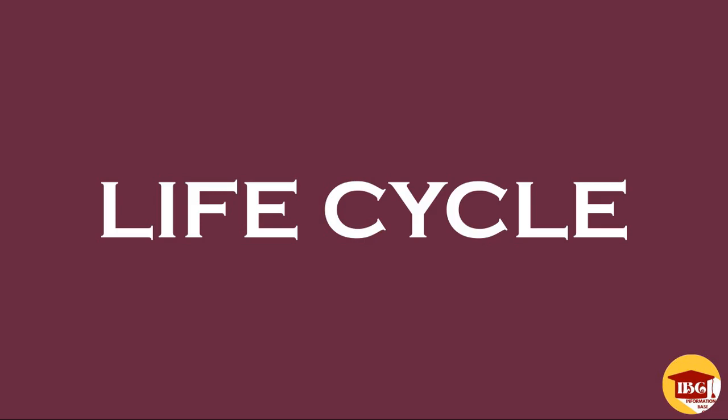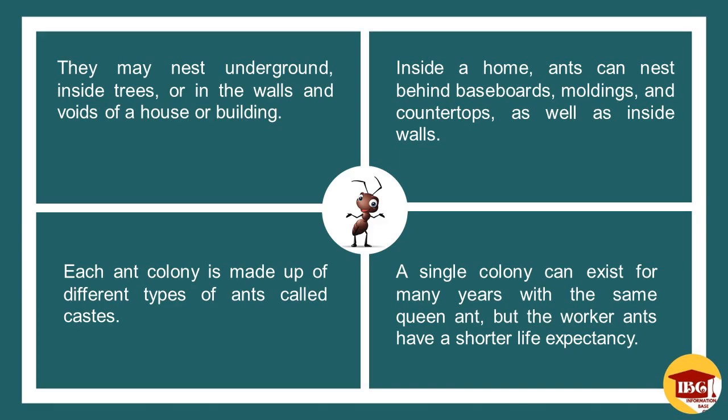Fourth, the life cycle of ants: ants live in large groups called colonies. They may nest underground, inside trees, or in the walls and voids of a house or building. Inside a home, ants can nest behind baseboards, moldings, and countertops, as well as inside walls. Each ant colony is made up of different types of ants called castes. A single colony can exist for many years with the same queen ant, but the worker ants have a shorter life expectancy.